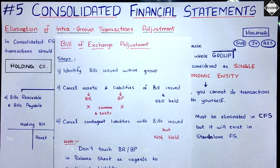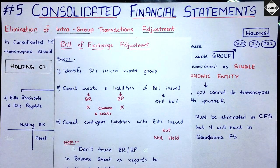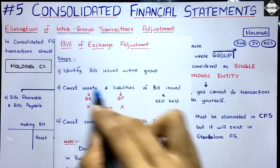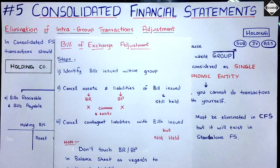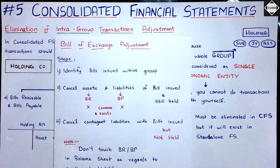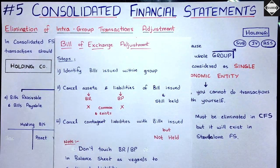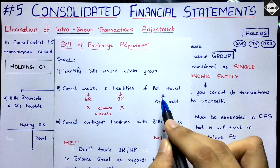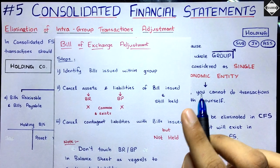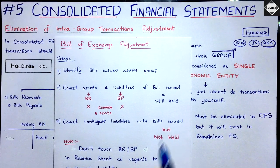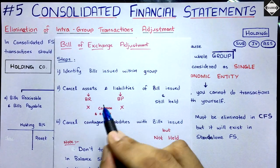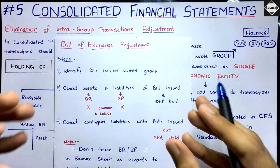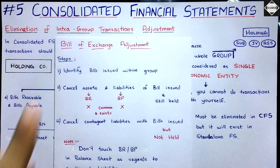Here are the steps to follow when we get a bills of exchange adjustment. The first step is to identify the total bills that have been issued within the group — identify the common bills between holding and subsidiary. The second step is to cancel the assets and liabilities of bills issued and still held within the group. You can only eliminate bills which still exist in the balance sheet of both holding and subsidiary.